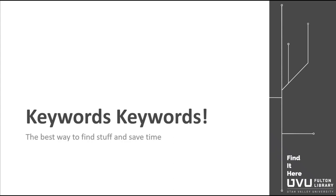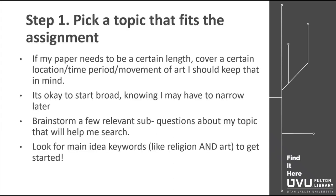So how do we build those keywords? Step one: I need a topic, and I need to make sure it fits my assignment. If my paper needs to be a certain length, cover a certain location, time period, or movement of art, I should keep that in mind. For this example, let's assume I need to write a research paper on a piece — or compare a few pieces — by an American artist from before 1940. The paper will be 10 to 12 pages long, so I should plan on needing 10 to 12 sources good enough to make it into my final draft.